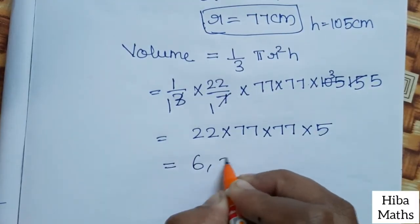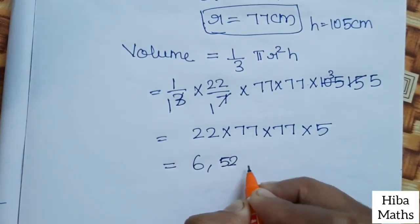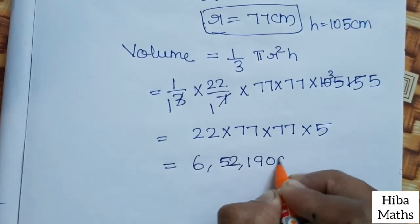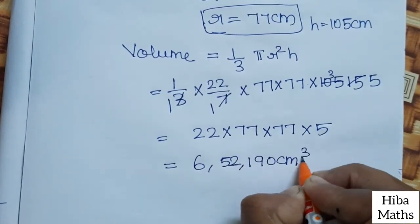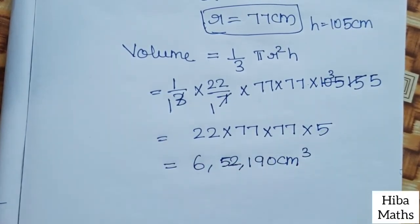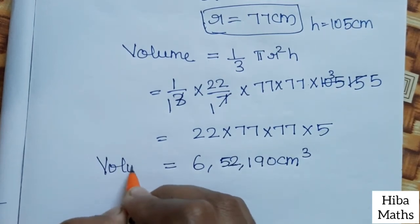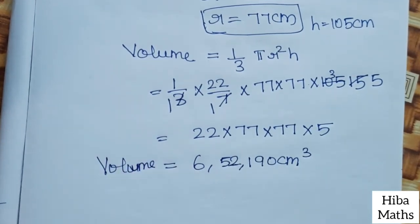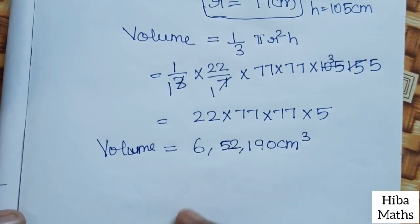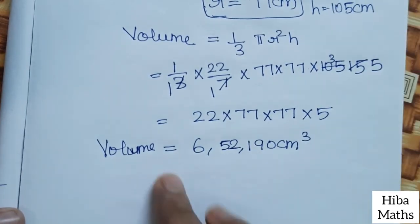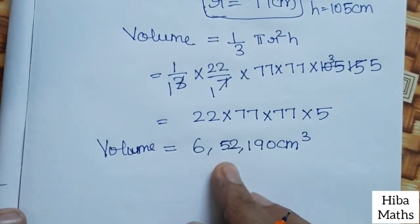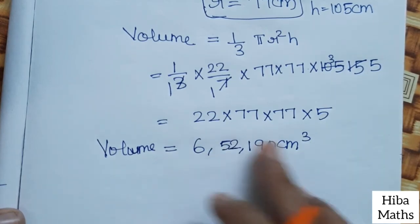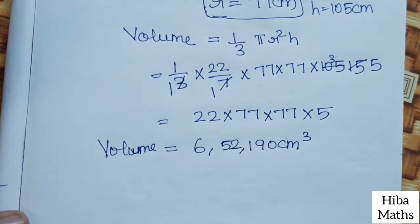The volume is 6,52,190 cm³. If you multiply all the numbers, you get the same answer: 6,52,190 cm³. Thank you so much for watching.